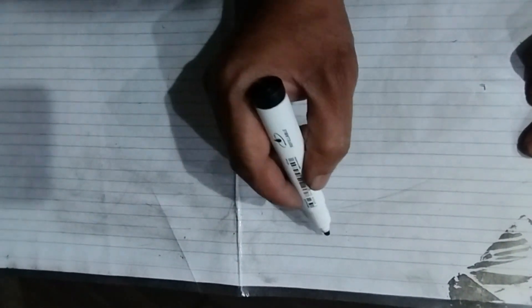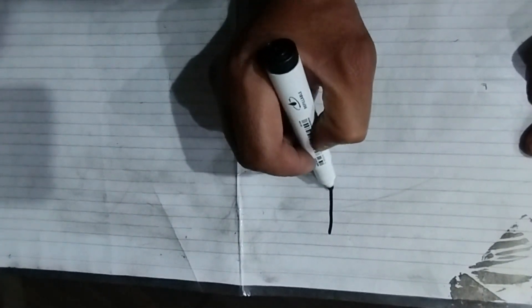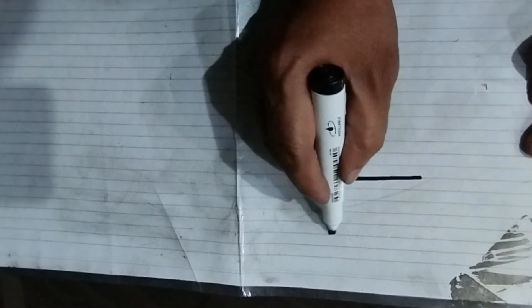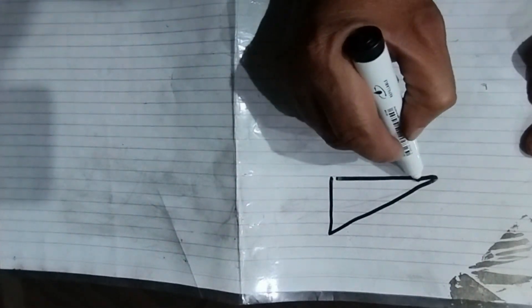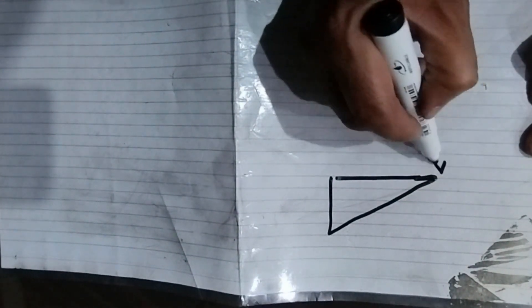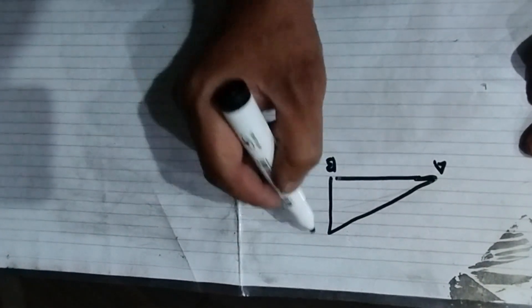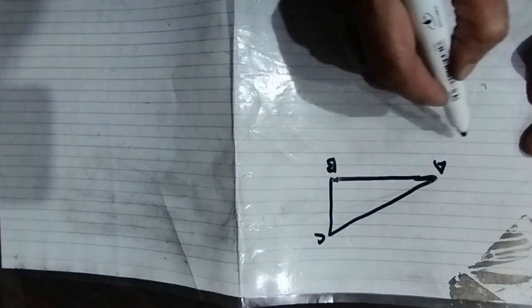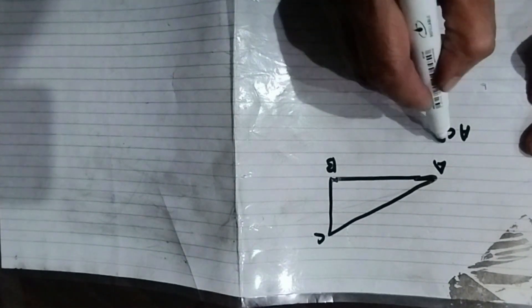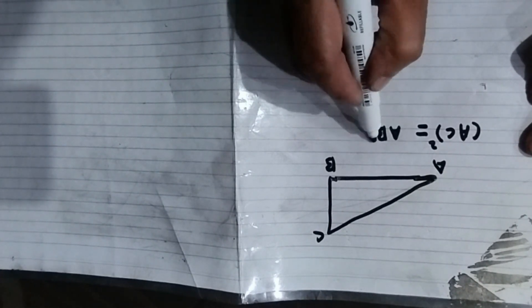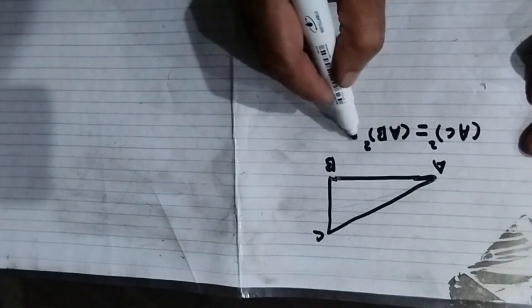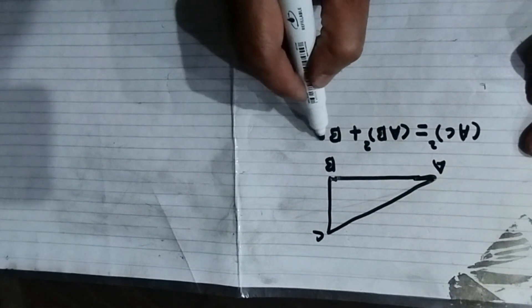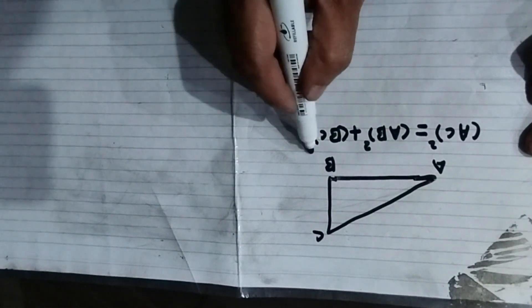Pythagoras theorem says that if there is a right-angled triangle, suppose ABC like this - A, B and C - then AC square is equal to AB square plus BC square.